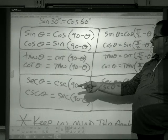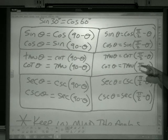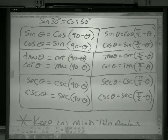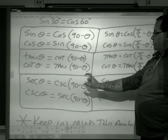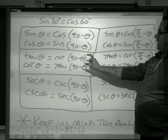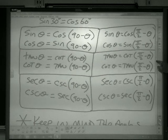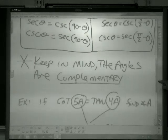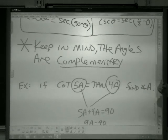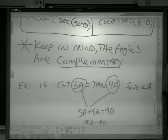Whether I'm using degrees or radians, we can write it either way. Those are the ones that pair up as co-functions: sine and cos, tan and cotan, secant and cosecant. They are co-functions. As long as you keep in mind that the angles are complementary, you can solve any one of these problems.